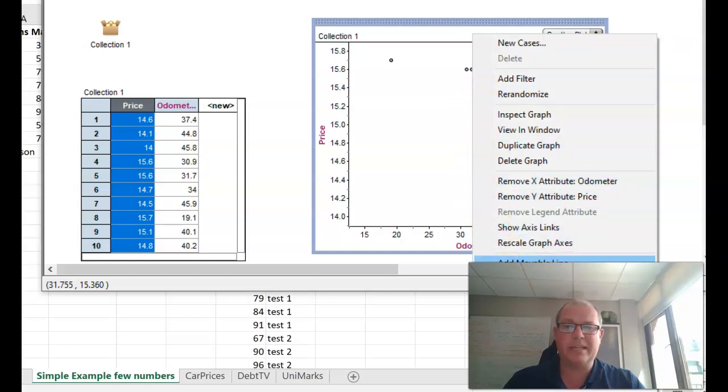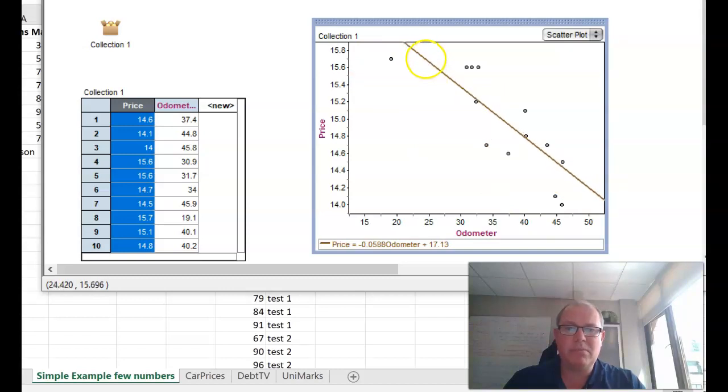I want you to right click and choose add movable line. You can see I've got a movable line. I'm going to move my movable line - at the ends you can rotate it and in the middle you can move it up and down until I am happy with where my movable line is.